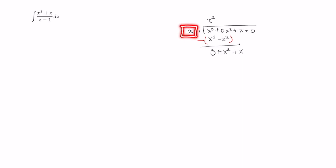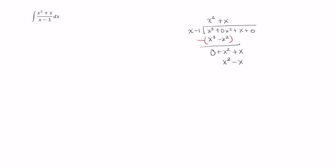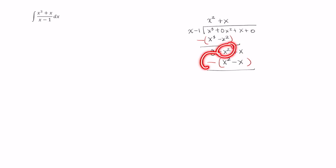Now we can ask ourselves: what do I multiply by x to get x squared? If you said x, you're correct, so let's add x here. Now distribute this x to both of these terms. X times x is x squared, so that will go here. X times negative one is just negative x. And then we want to subtract this bottom expression from this upper expression.